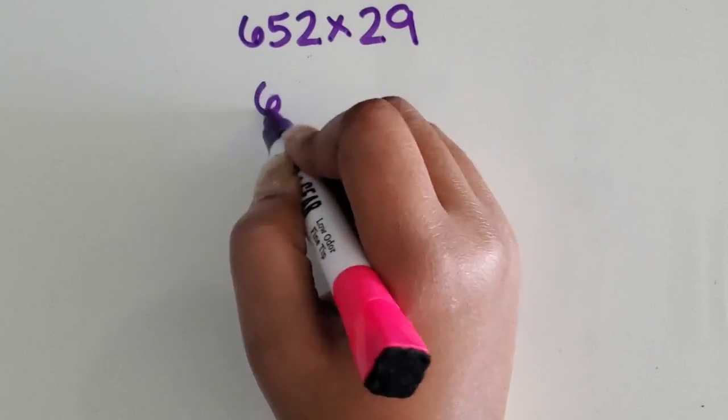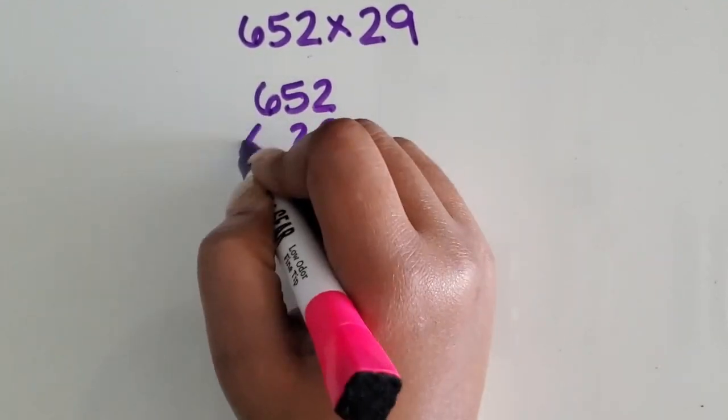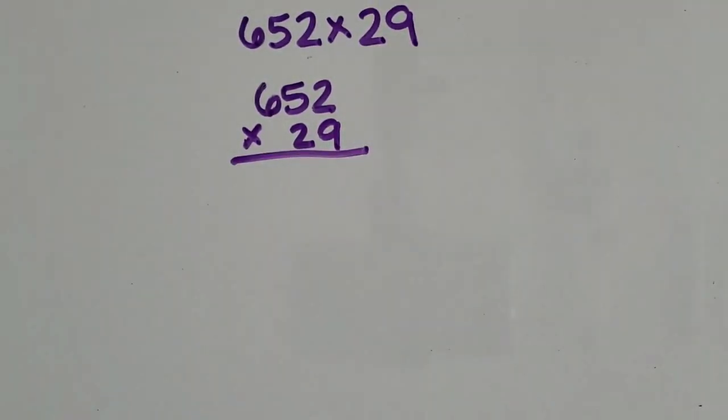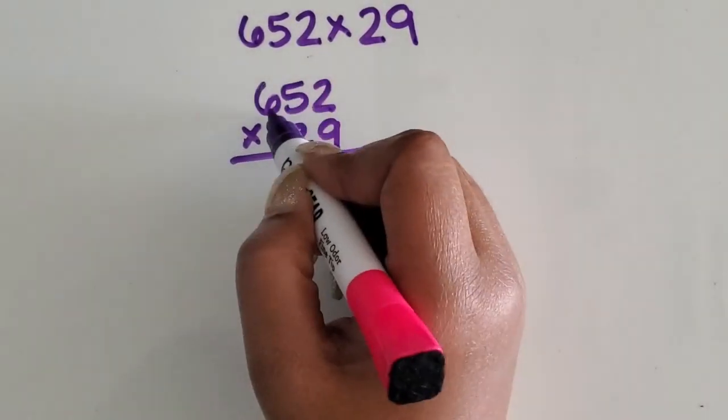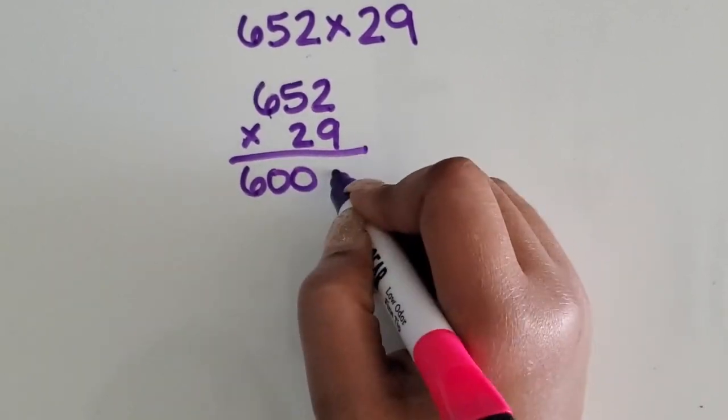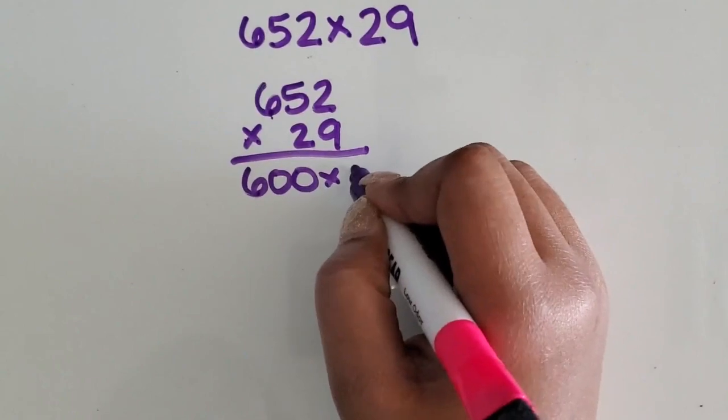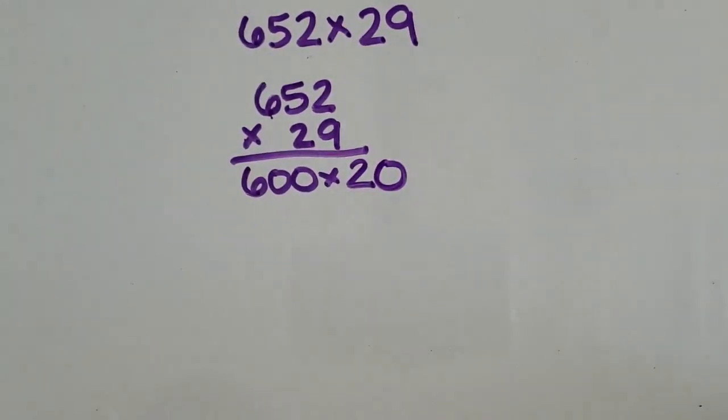So we're going to line them up vertically like we would standard algorithm. But like area model or partial sum, we're going to represent the value of each digit separately. So I know the 6 is in the hundreds place. We're going to do 600 times the 2 on the second number, which is in the tens place. So that's 20.